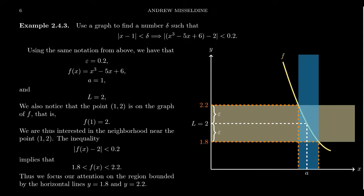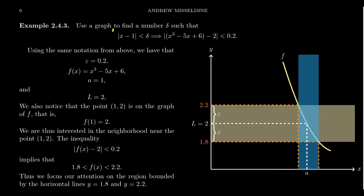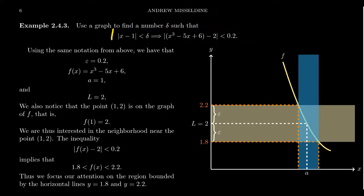In this question, we have provided the graph of a function f, and we're asked to identify what number delta — the best choice of delta — that guarantees the absolute value of x minus 1, when it's less than delta, will imply that the absolute value of x cubed minus 5x plus 6 minus 2 is less than 0.2.